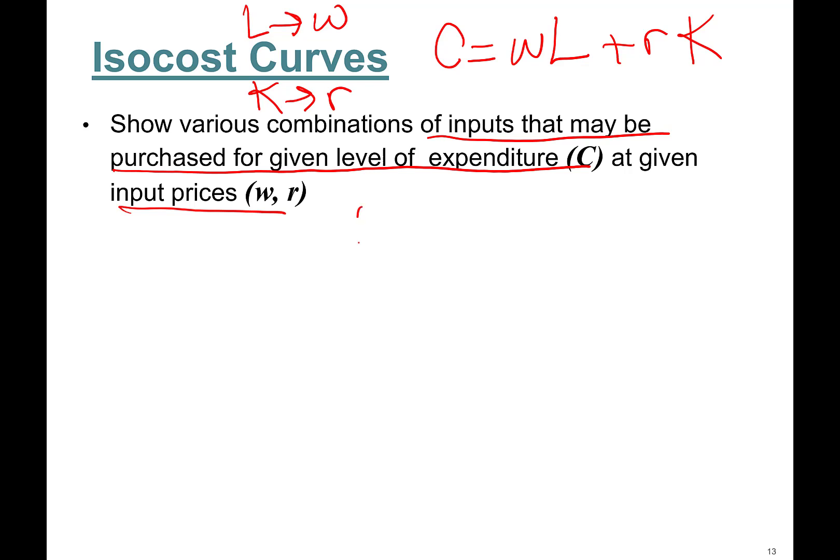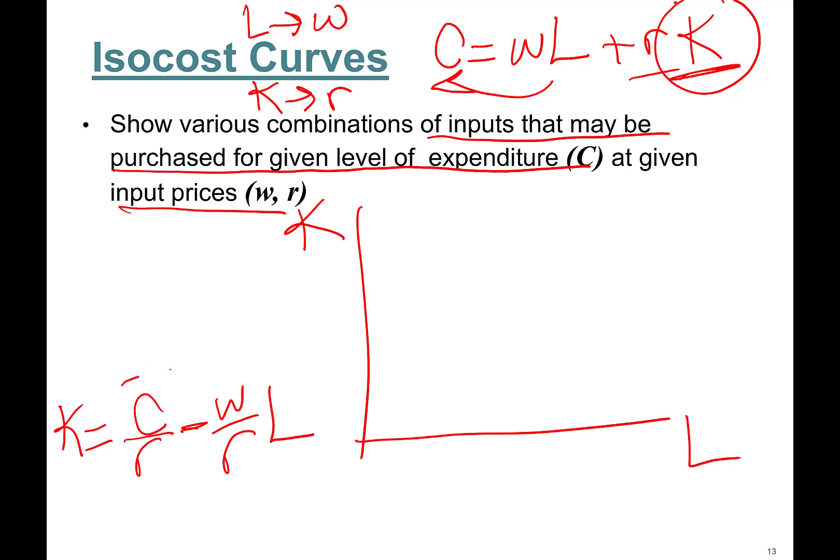Okay, so we can actually put this in a graph just like the graph we used in the isoquant plane. So capital here, labor here. Okay, so treat capital just like the y-axis. So if you can rearrange, I want to leave capital by itself. So I'm going to throw this to the other side and divide everything by r. What you'll get is K equals C over r minus w over r times L.